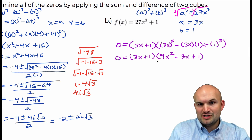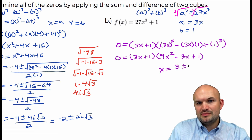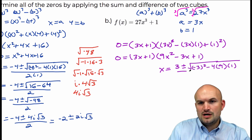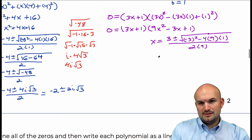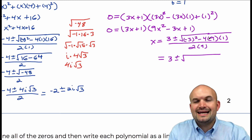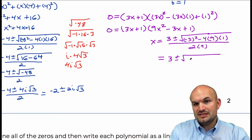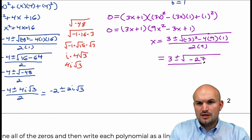Let's apply the quadratic formula. x equals opposite of b, which is positive 3, plus or minus the square root of negative 3 squared minus 4 times a times c, all divided by 2 times a. Simplifying: 3 plus or minus the square root of 9 minus 36, all over 18. That gives 9 minus 36, which is a negative 27, all over 18.